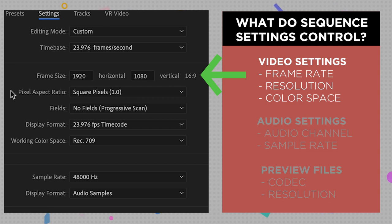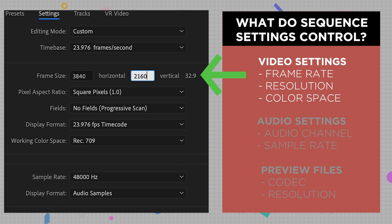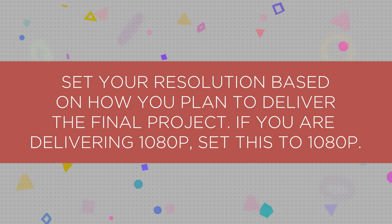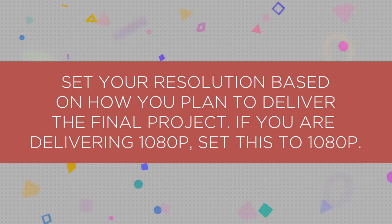Next we need to decide on the resolution of our video. These days I shoot most things in 4K, so I am going to set my resolution to 3840x2160, which is UHD 4K. You should be setting this resolution based on how you plan to deliver your video. If you are going to deliver a 1080p video, I suggest setting a 1080p resolution here. If you are going to deliver 4K, then set a 4K resolution.